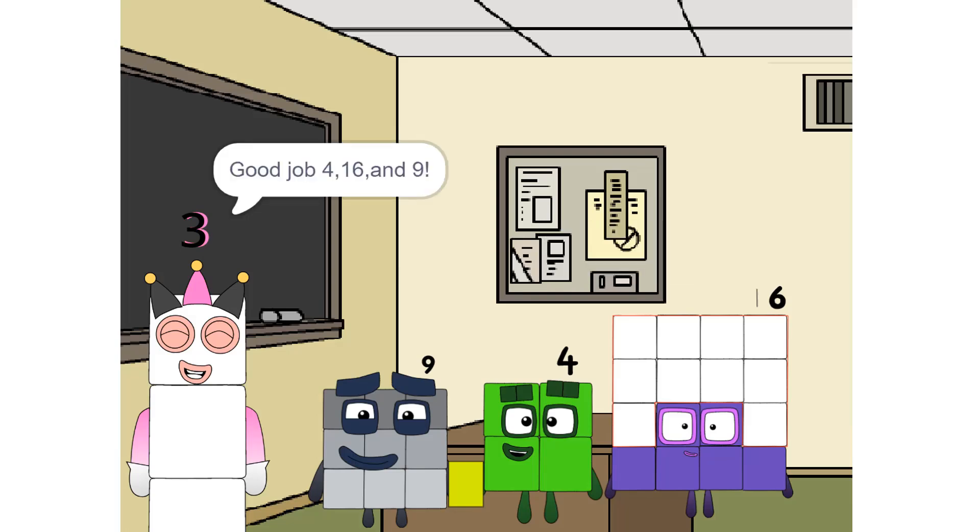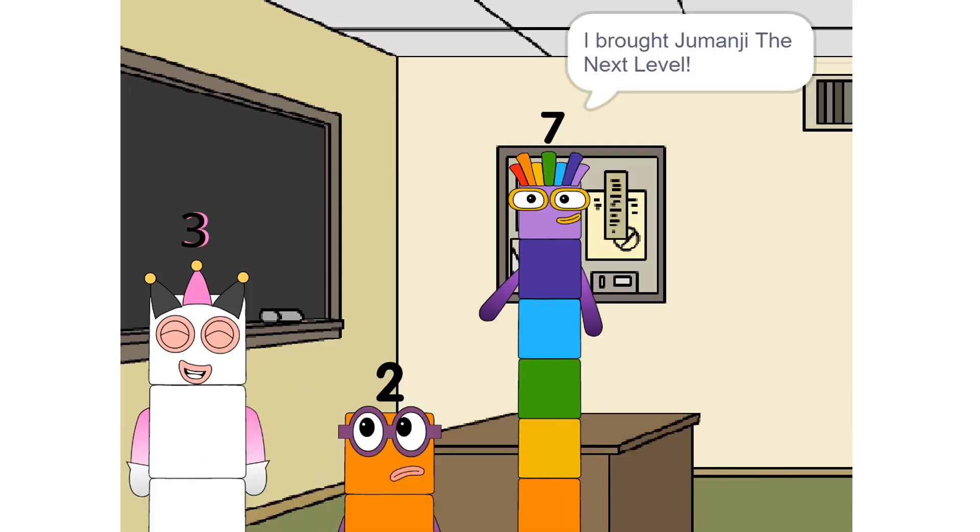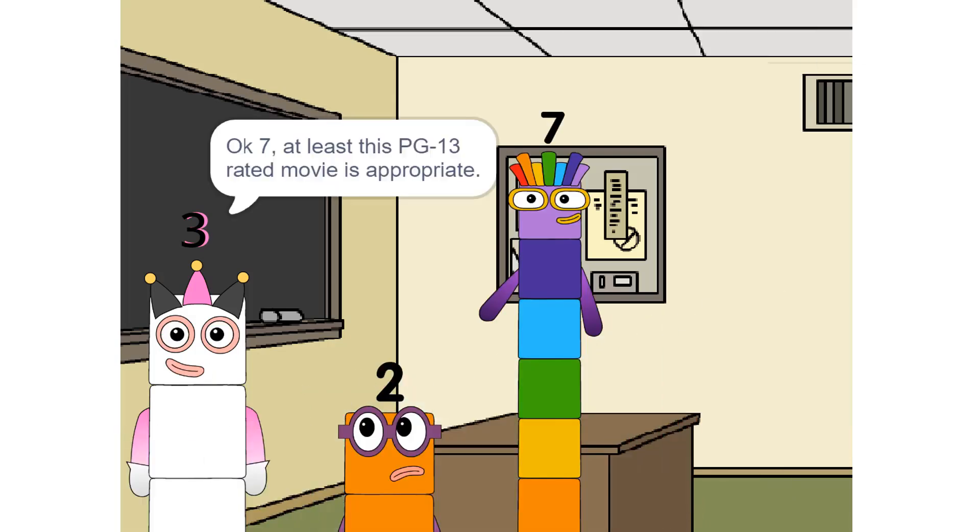You will get popcorn and soda with your movies. You know the drill. Me and the squares brought The Corpse Bride. Good job Four, 16, and Nine. Those movies are rated PG. You three will get candy and Gatorade with your movies and you know the drill. I brought Jumanji the Next Level. Okay Seven, at least this PG-13 rated movie is appropriate.